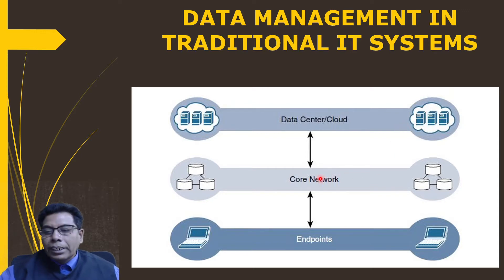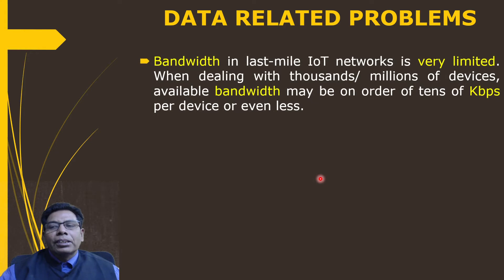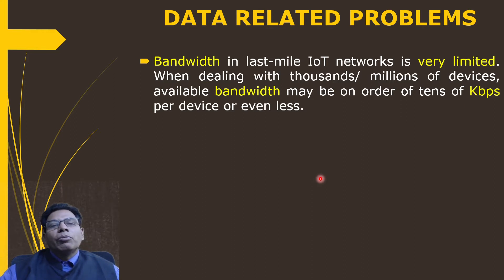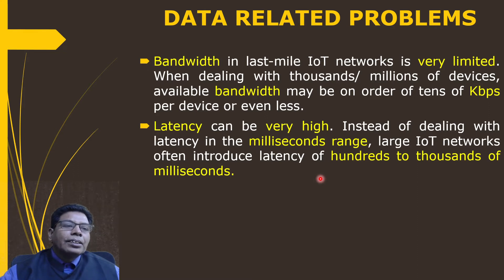Bandwidth in the last mile of an IoT network is very limited. When dealing with thousands or millions of devices, available bandwidth may be on the order of tens of kbps per device or even less. Latency can also be very high — instead of milliseconds, large IoT networks often introduce latency of hundreds to thousands of milliseconds.